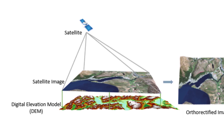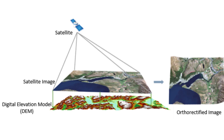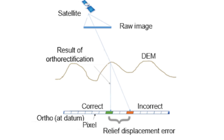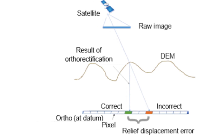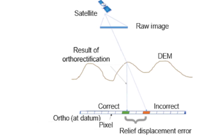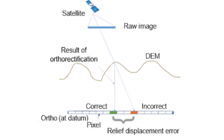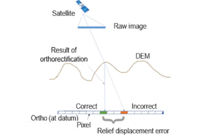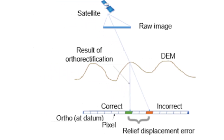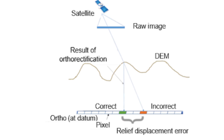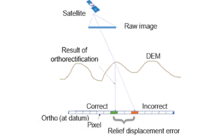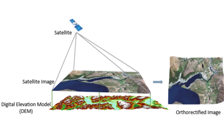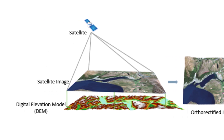Removing the effect of relief displacement using orthorectification: the magnitude of the displacement in the image between the top and the bottom of an object is its relief displacement. This displacement is related to the height of the object and the distance from the nadir point. Because of relief displacement, features in a perspective projection appear to lean outward from the center of the image. Orthorectification can solve the relief displacement problem. During orthorectification, the image is projected onto the actual underlying surface using information from the DEM.